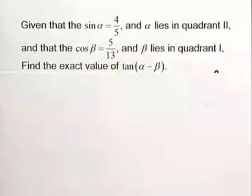Let's find the exact value of a tangent using the difference formula. Here we have the sine of alpha is equal to four-fifths, and alpha is in quadrant two. We also have that the cosine of beta is five-thirteenths, but beta lies in quadrant one. We want to find the exact value of the tangent of alpha minus beta, given this information.